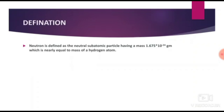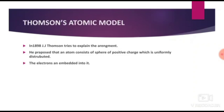The neutron is defined as the neutral subatomic particle having a mass of 1.675 × 10⁻²⁴ grams, which is nearly equal to the mass of a hydrogen atom. So the mass of the neutron is nearly equal to the mass of hydrogen, i.e., 1.675 × 10⁻²⁴ grams.